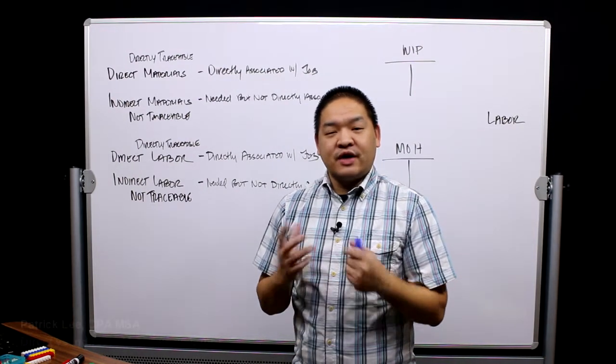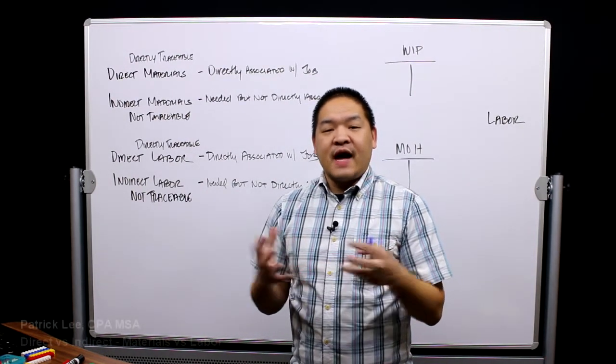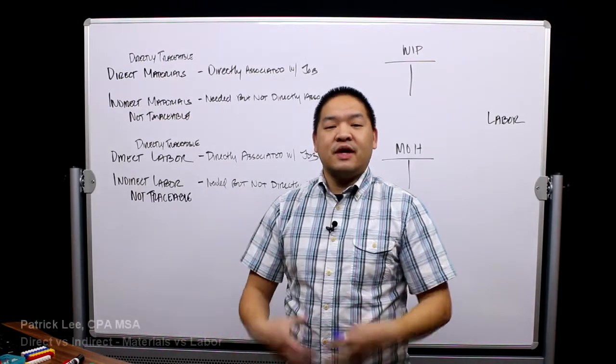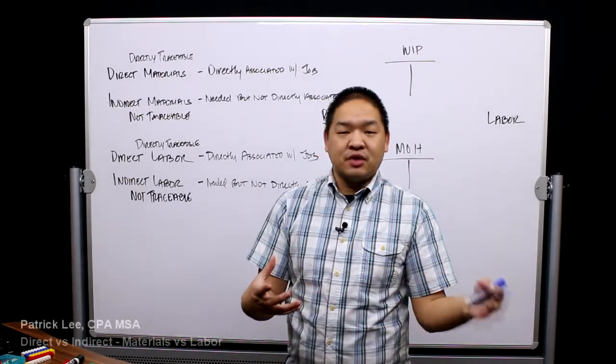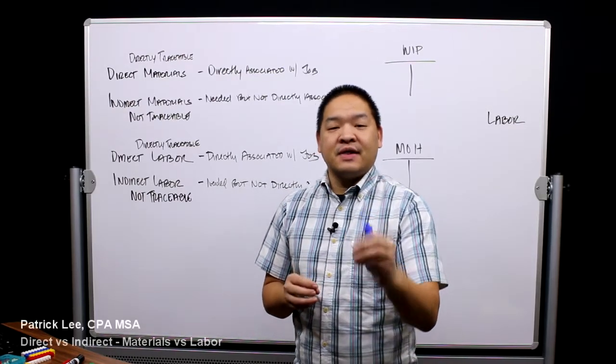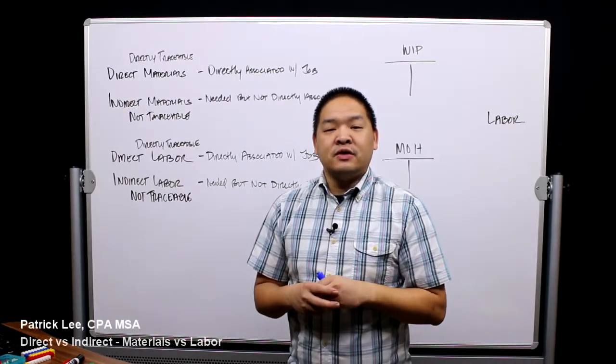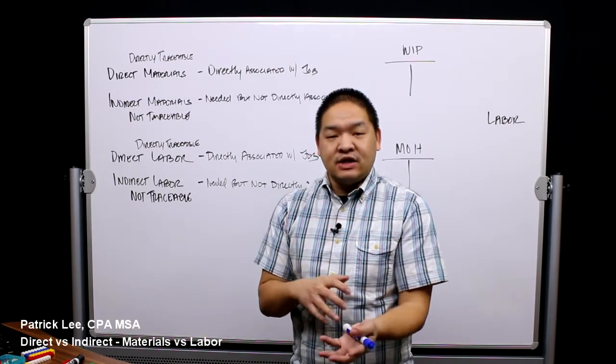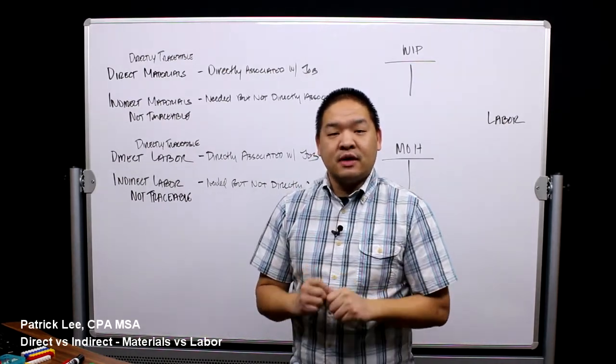All right, in this lesson we're going to continue our discussion on the manufacturing process and the accumulation of cost within the manufacturing process. We're going to take a deeper look into materials and labor and review the differences between direct versus indirect.